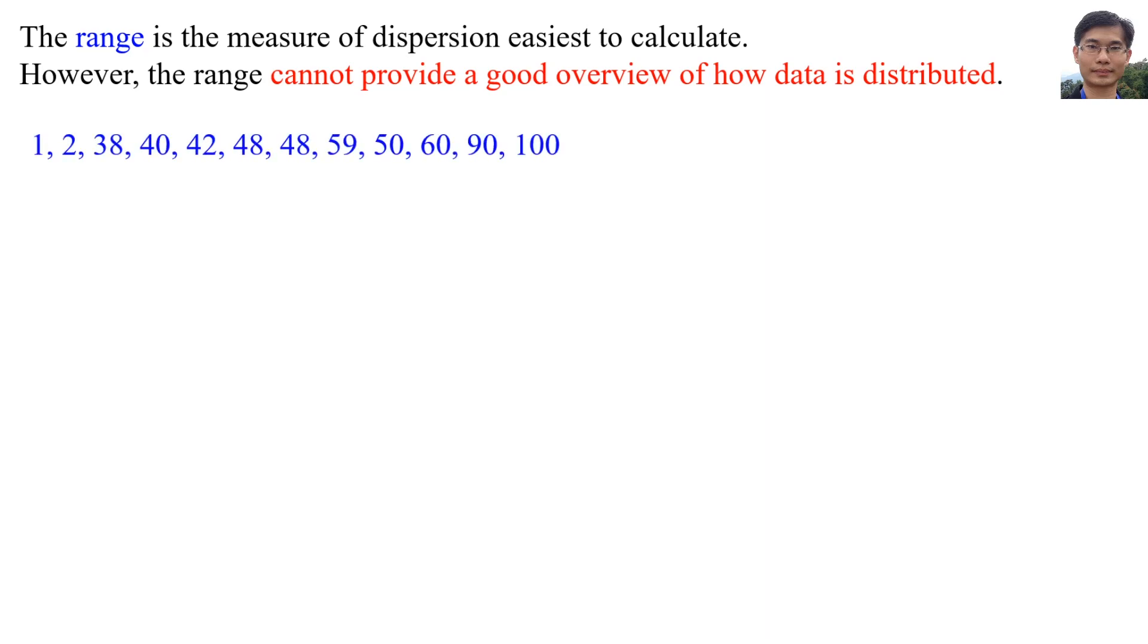For example, the following data: 1, 2, 38, 40, 42, 48, 48, 59, 50, 60, 90, 100. In cases where there is an outlier or extreme value - here 1, 2, 90, and 100 - most of the data are between 38 to 60. They are called outliers or extreme values.